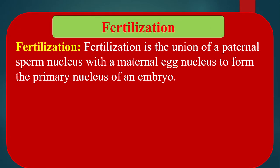Fertilization. What is fertilization? Fertilization is the union of a paternal sperm nucleus with a maternal egg nucleus to form the primary nucleus of an embryo. Fertilization is necessary for sexual reproduction. It happens only between sperm and ovum of the same species. Generally, fertilization is irreversible — once an ovum is fertilized, it will not fertilize again.